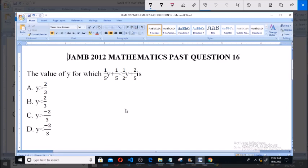Now we're simply asked to solve this inequality. We're given 1 over 5y plus 1 over 5 is less than 1 over 2y plus 2 over 5. This simply means that y over 5 plus 1 over 5 is less than y over 2 plus 2 over 5. Now collecting like terms...